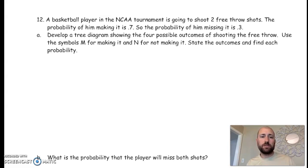It says develop a tree diagram to show the four possible outcomes, where M is for making and N is for not making. So he could either make it or not make it, and then on the second shot, make it or not make it.